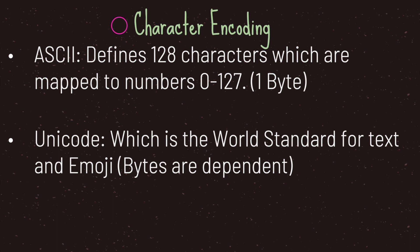The first type is ASCII, which defines characters mapped to numbers zero through one hundred and twenty-seven. In this case every character takes up one byte in memory.